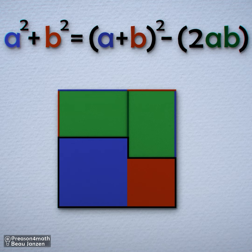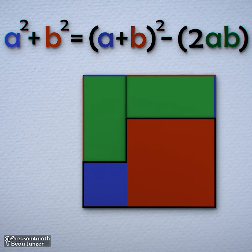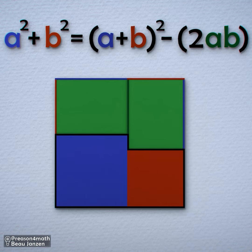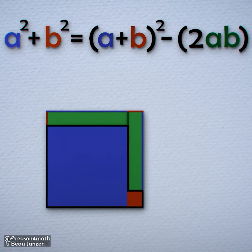This will work for any values of A and B. This may have taken a few more steps to see how this identity works, but frankly, the process of finding out why this works is more important than memorizing a formula.